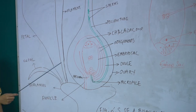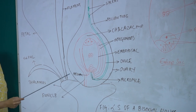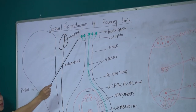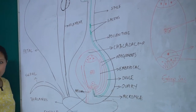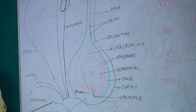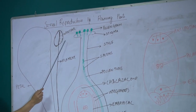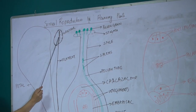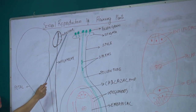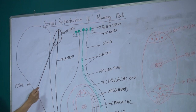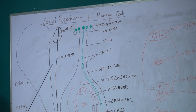The point of attachment of the ovule with the funicle is called the hilum. There is a small opening at the micropylar end called the micropyle, and the opposite end is called the chalazal end. This is the detailed structure of the female reproductive structure in flowering plants.